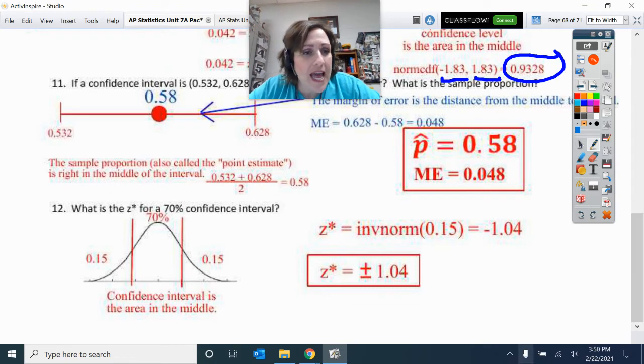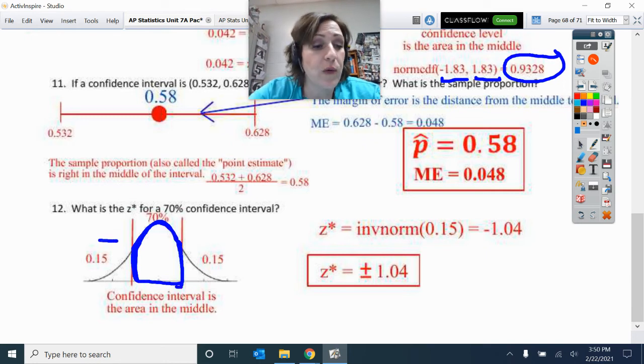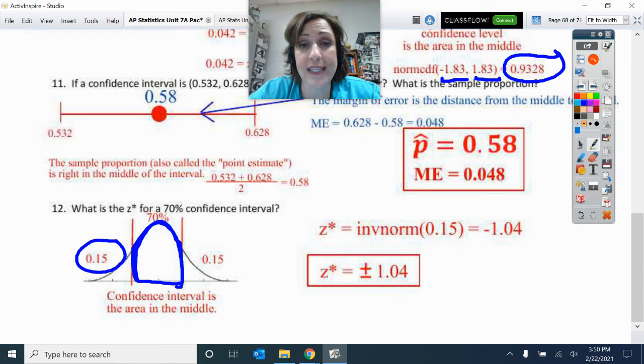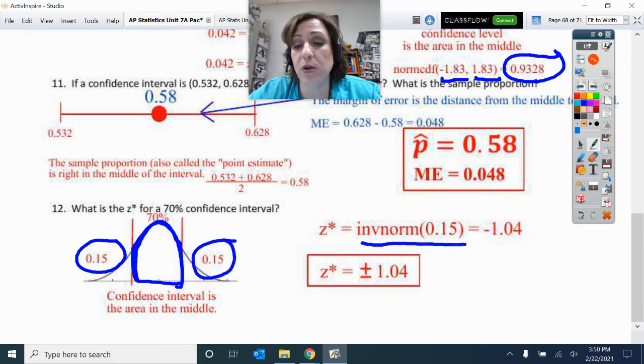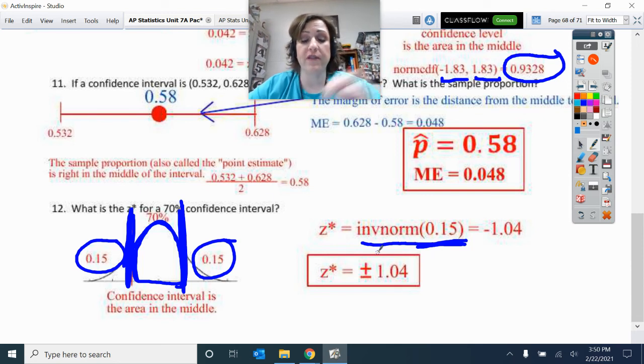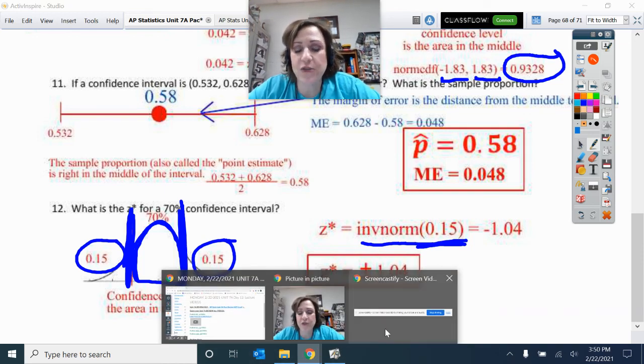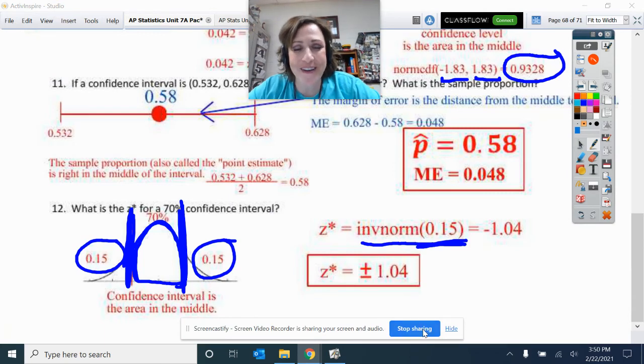So let's do this last one, number 12. So I just threw an unusual confidence level at you. So the critical value for confidence level. Remember that confidence level is what's here in the middle. So if 70% is in the middle, then we split that remaining 30% between the two edges. So I'm going to do inverse norm of 0.15. So I get negative 1.04. And then from that, I know, of course, my positive twin up here is positive 1.04. So those are the two critical values. That is the end of numbers 7 through 12 of this Unit 7-8 review. I hope that answered your questions on those problems. We'll see you next time.